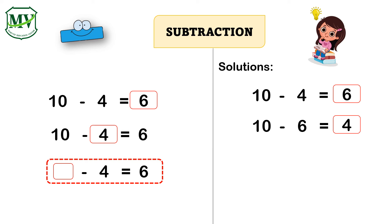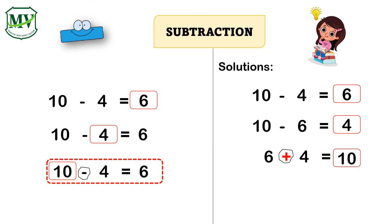Next and last: the unknown number minus 4 equals 6. If the minuend is the unknown number, we change the mathematical operation from subtraction into addition. Let's add 6 plus 4 equals 10. That means 10 is the unknown number.